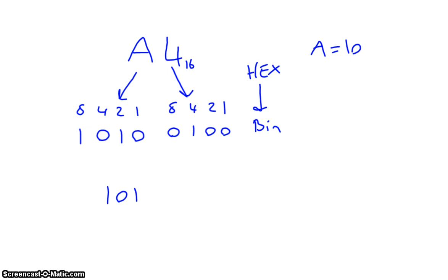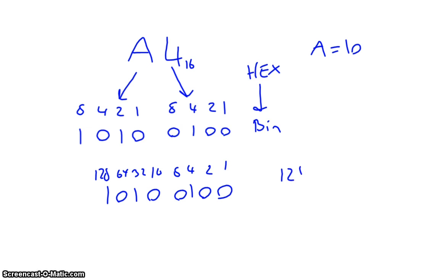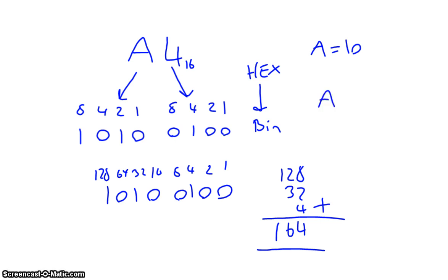Let's take this binary number with column values 1, 2, 4, 8, 16, 32, 64, and 128. We add together 128 plus 32 plus 4, which equals 164. Therefore A4 in hex equals 164 in denary, or decimal as you may like to call it.